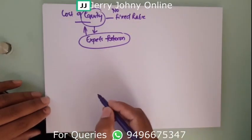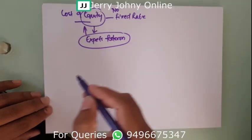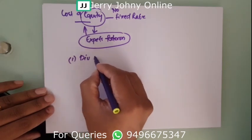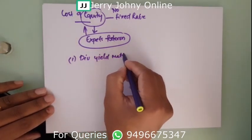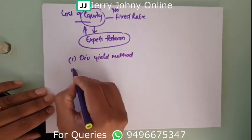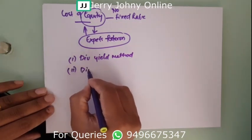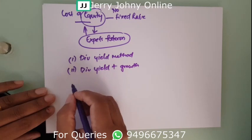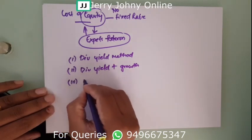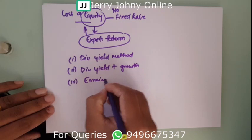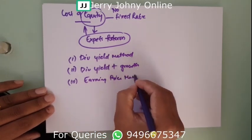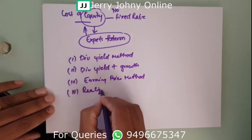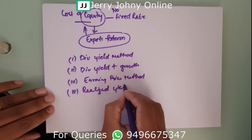Now, what are the different methods we can use for calculating the cost of equity? The first method is the dividend yield method. The second method is dividend yield plus growth. The third method is the earnings price method. The fourth one is the realized yield method.